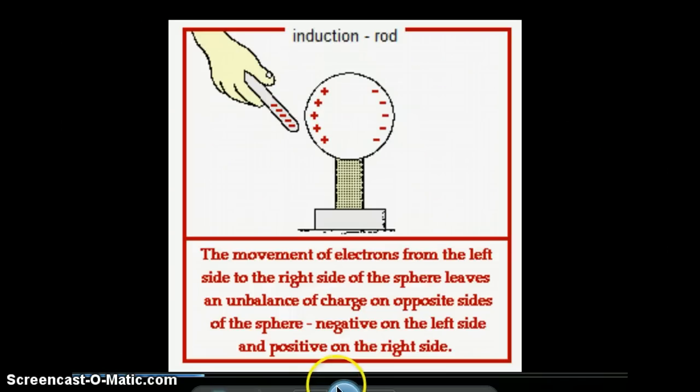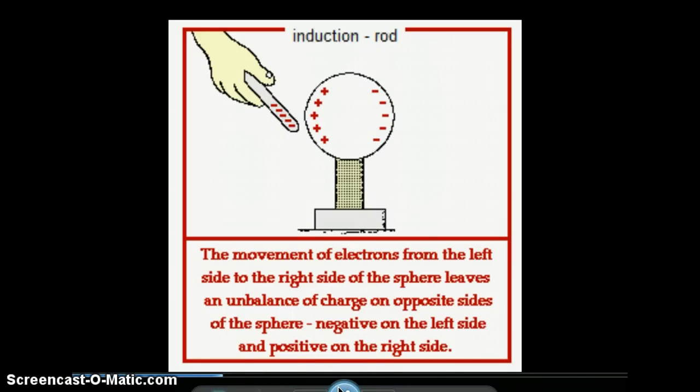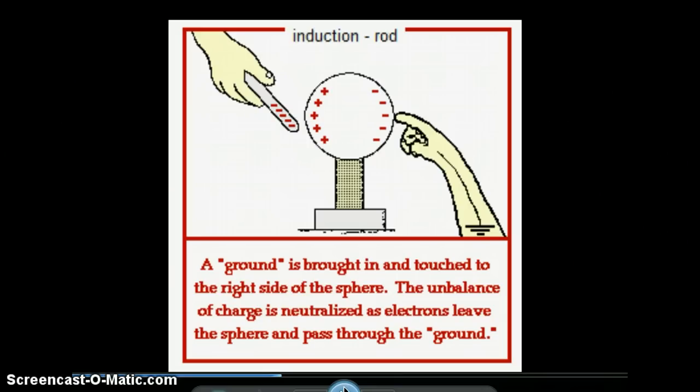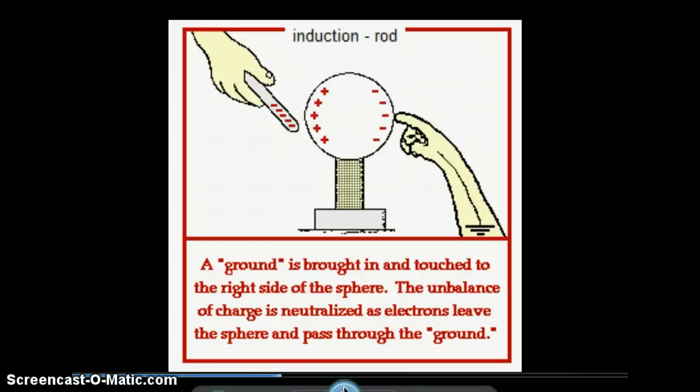Now that we've got this polarized situation set up, our next step is to bring in the grounding element. A ground just means a place where we can provide either electrons to come in, or electrons to go out to some other object. The Earth being the biggest object around, that's a great place to get electrons from, or to send electrons to.